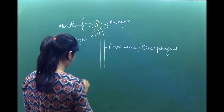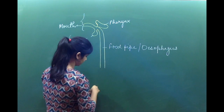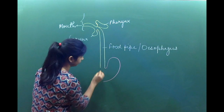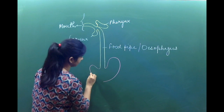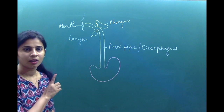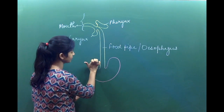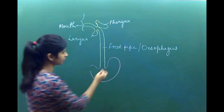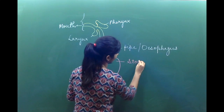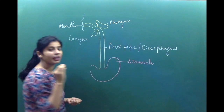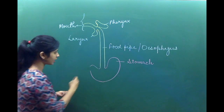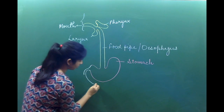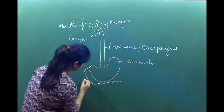Now this food pipe will open into the stomach. It is like a bag structure. This is the stomach. Now we will label the stomach — it is easy to find, it is very easy.